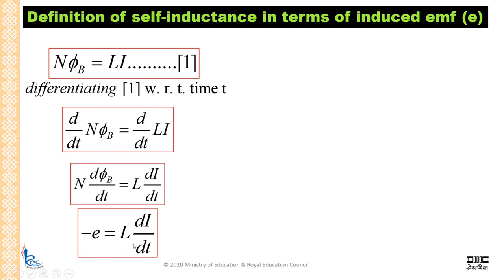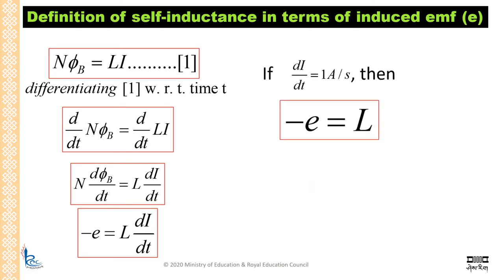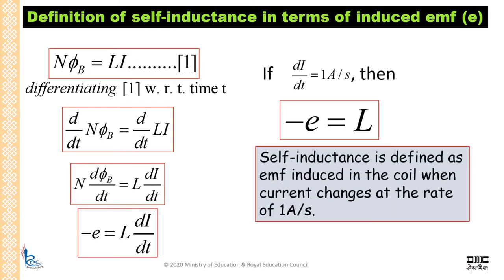Now, if the current in the circuit is changing at the rate of 1 ampere per second, then L times 1 gives us L. So we have minus E equal to L. From here, we can define self-inductance as the EMF induced in the coil when current changes at the rate of 1 ampere per second.